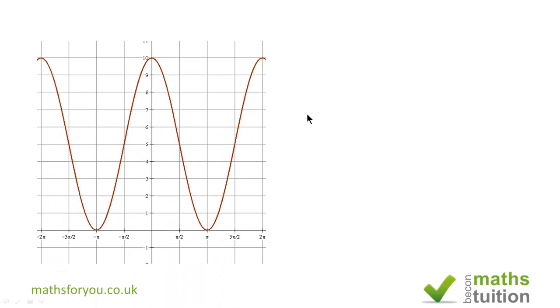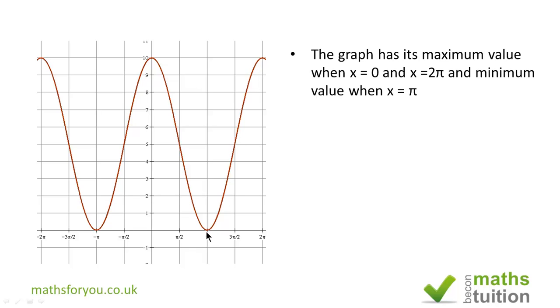Now the graph tells us that the maximum value occurs when x is 0 and when x is 2π. The minimum value occurs when x is π, and it's also symmetrical about y equals 5.